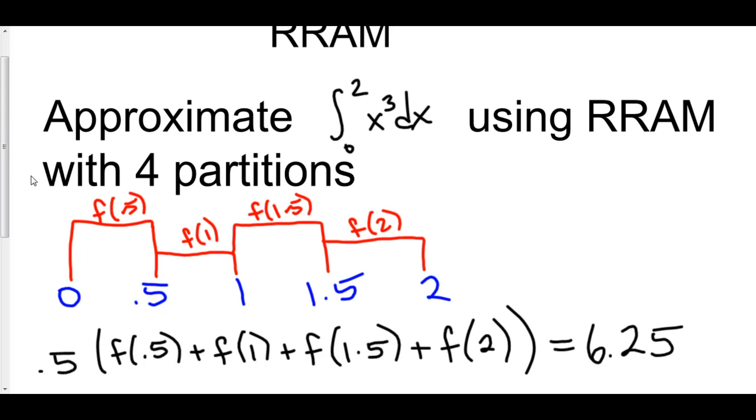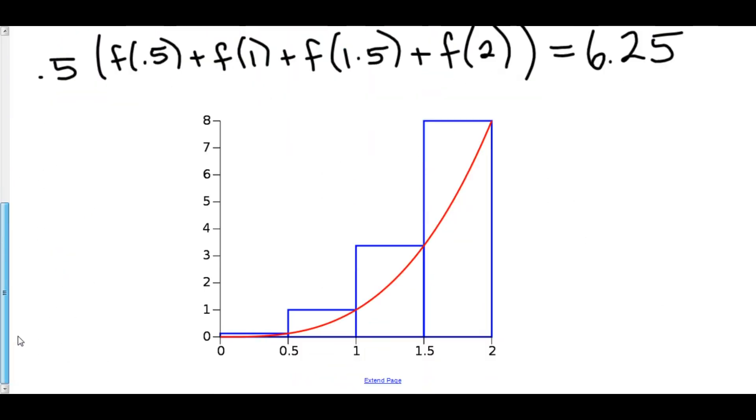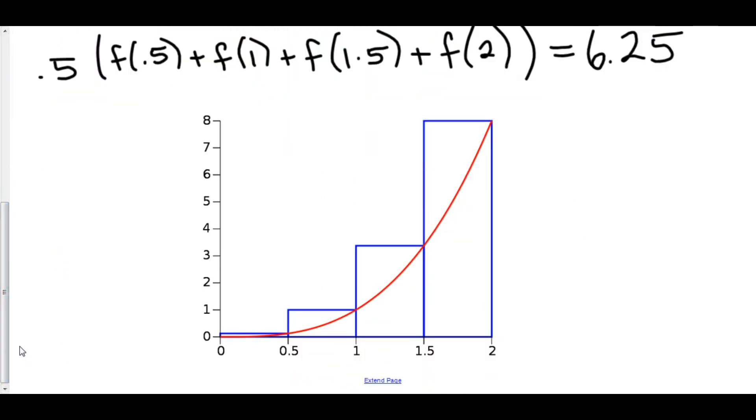However, I have actually graphed it out for you. And this is what the graph looks like. It's exactly as we had noticed. Our first rectangle goes from x equals 0.5 up and over. x equals 1, up, over. 1.5. And finally, x equals 2.